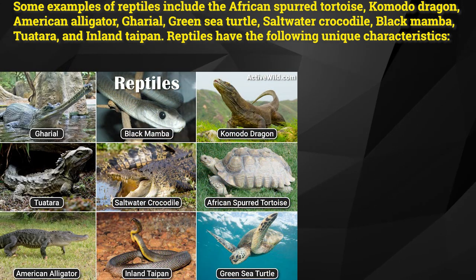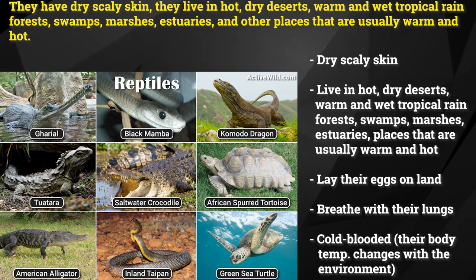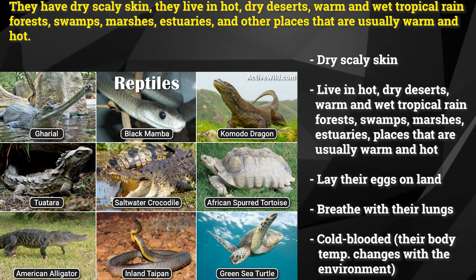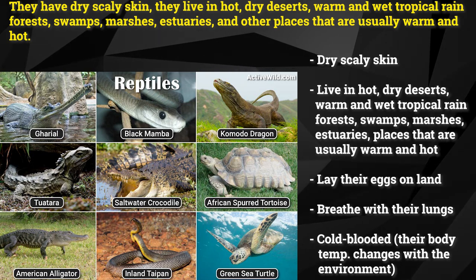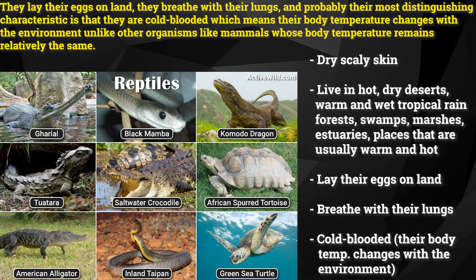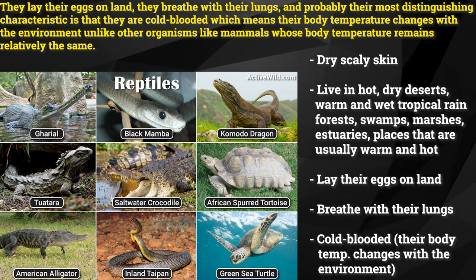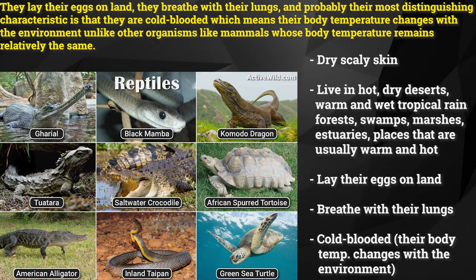Reptiles have the following unique characteristics: they have dry, scaly skin. They live in hot, dry deserts, warm and wet tropical rainforests, swamps, marshes, estuaries, and other places that are usually warm and hot. They lay their eggs on land. They breathe with their lungs, and probably their most distinguishing characteristic is that they are cold-blooded, which means their body temperature changes with the environment, unlike mammals whose body temperature remains relatively the same.